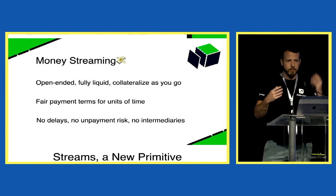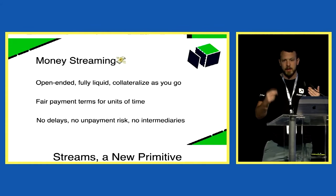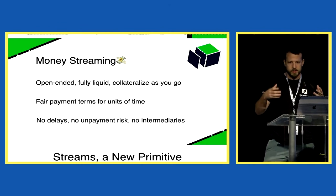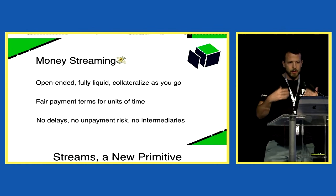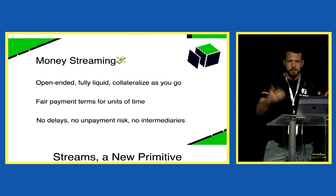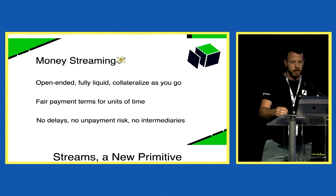Money goes from your account to another every second. Streams are fully liquid — as you receive funds every second, you're able to spend them. They're not locked somewhere; it's in your balance. And you can collateralize as you go, which means you don't have to deposit funds upfront. You can literally spend your money as you receive it because it's fully liquid.